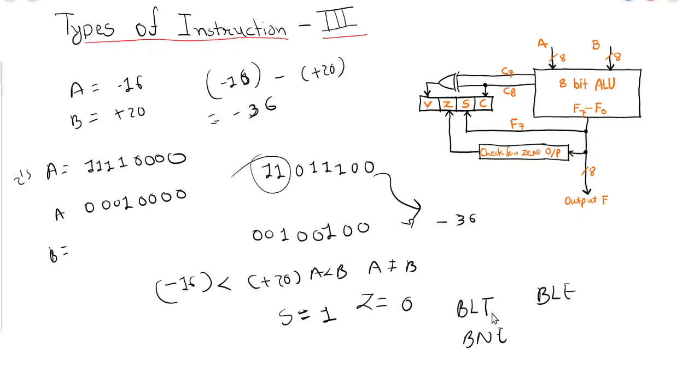Just remember that BNE means branch if not equal, and BNZ means branch if not zero. Both are the same. Similarly, the two instructions branch if equal and branch if zero are also the same. Each of these repeated three times in the table we discussed in the previous video.